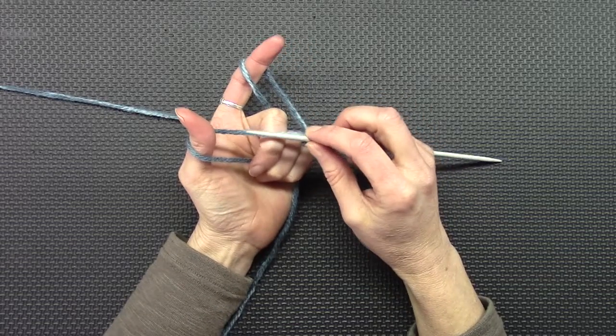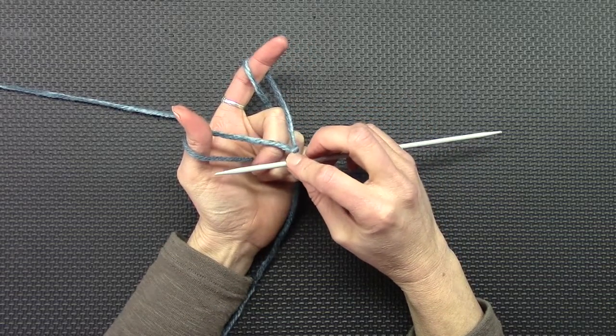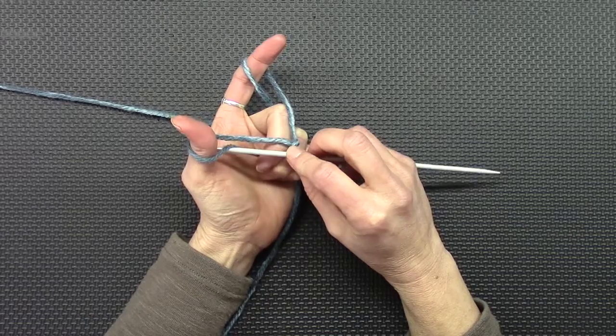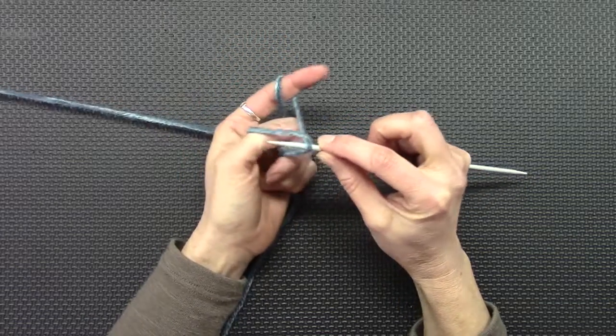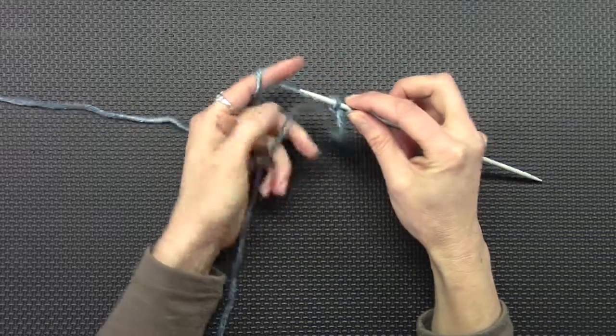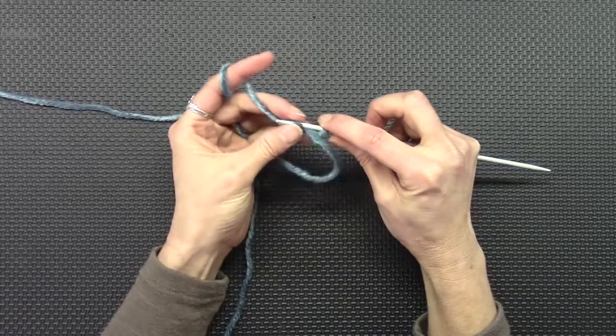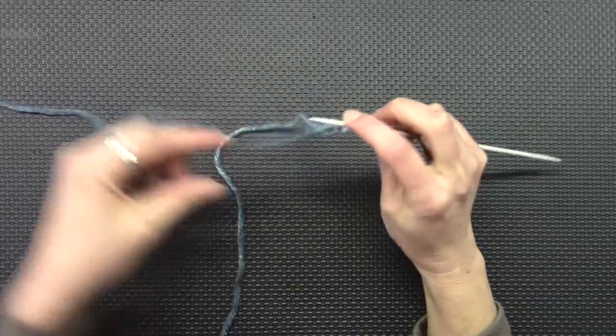And with the traditional long tail cast on, if you've been busy with that, you go under that bottom yarn, over the top yarn, through the loop, and pull. And that's your long tail cast on. But that doesn't give enough stretch.